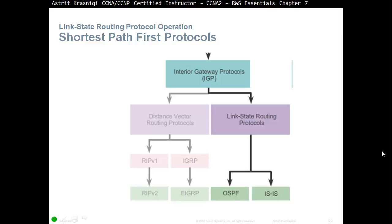Link state routing protocols are different, because these protocols learn the whole topology and keep it in memory, maintaining that topology. For this reason, link state routing protocols require a lot more resources than distance vector routing protocols, but there is no routing loop on link state protocols.